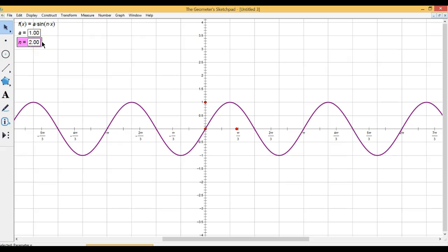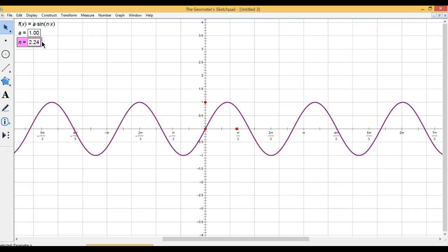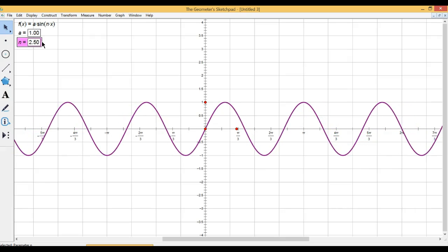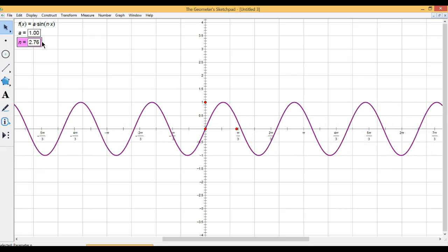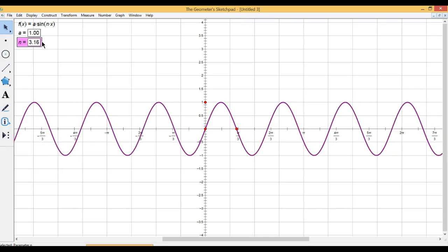So our period, it turns out to be 2 pi, or 360, divided by that value of n. Let's just see it move a little bit more. Now if we take it up to n equals 3, and n equals 4,